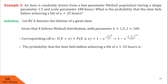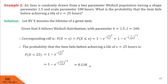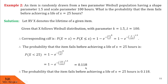We find the probability that the item fails before achieving a life of 25 hours, denoted P(X < 25). Using the CDF definition, P(X < 25) = 1 minus e^(−(25/100)^1.5), where x is 25, k is 1.5, and lambda is 100. After substituting and solving, P(X < 25) equals 0.118. Therefore, the probability that the item fails before achieving a life of 25 hours is 0.118.